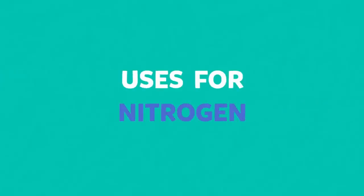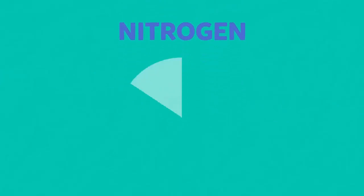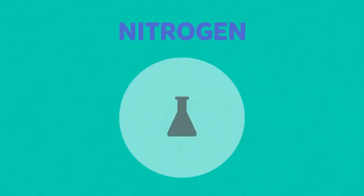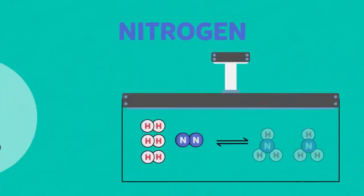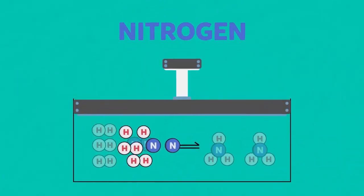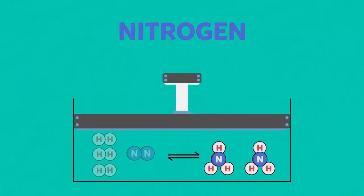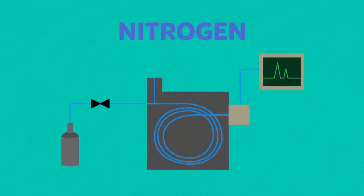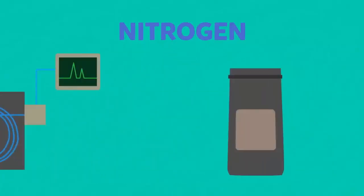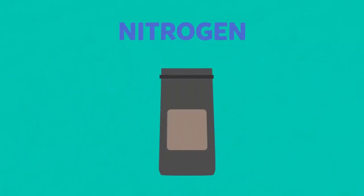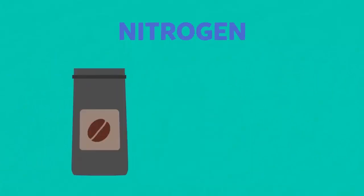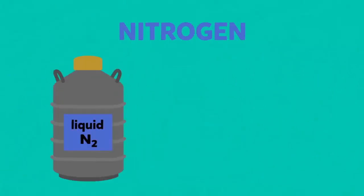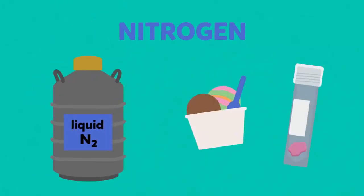The important uses for nitrogen are creating an inert atmosphere for chemical processes, the Haber process for the manufacture of ammonia, gas chromatography, packing oxidisable foods such as ground coffee, and also liquefied nitrogen can be used for the freeze drying of food and preservation of tissue samples.